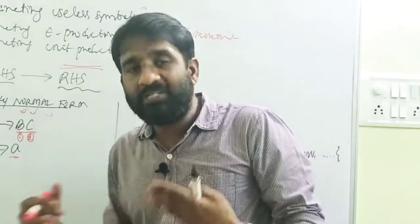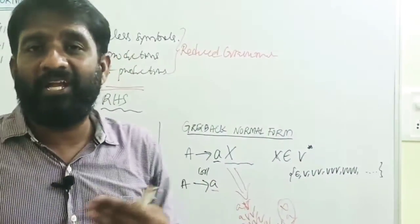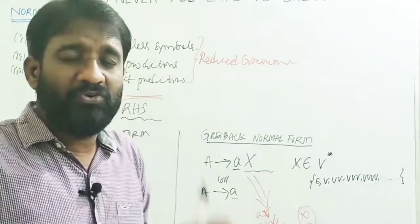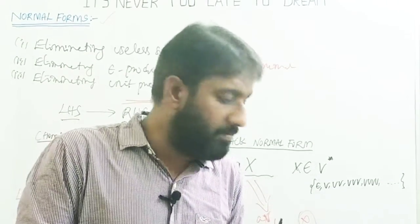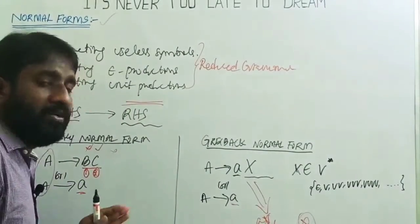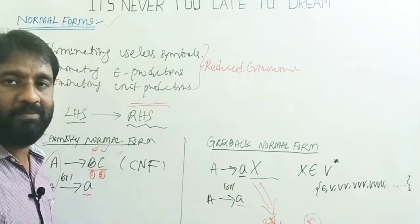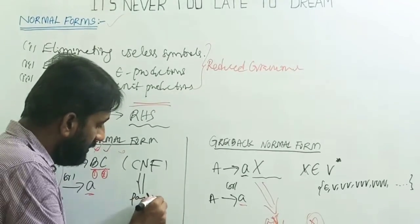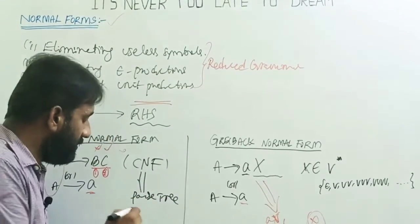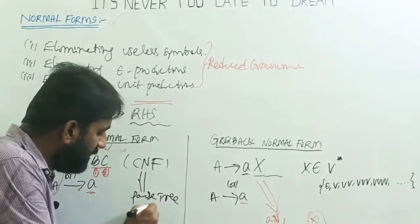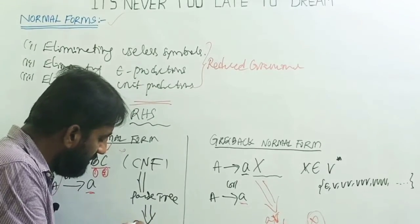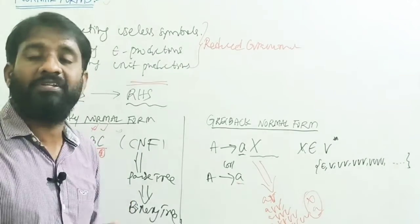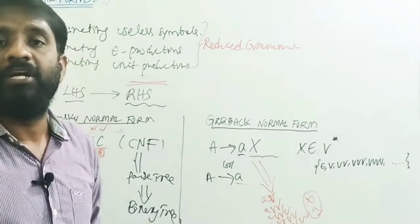What is the benefit of converting a context-free grammar into Chomsky Normal Form? If a grammar is in CNF, then you can generate a parse tree in an easy way, and the generated parse tree will always be a binary tree. That is one advantage of converting a context-free grammar into CNF.